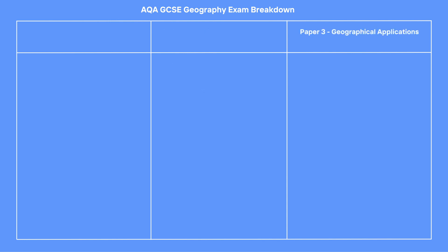Paper 3 is about Geographical Applications. It is split into Section A and Section B, and you answer all questions on this paper. Section A is the Issue Evaluation. A pre-release resource booklet is made available 12 weeks before this exam, and you should receive a copy. You will receive another copy in the exam. This section is worth 37 marks, including a question with 3 spelling, punctuation and grammar marks.